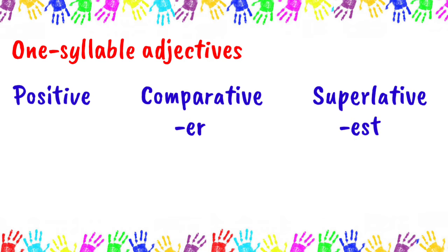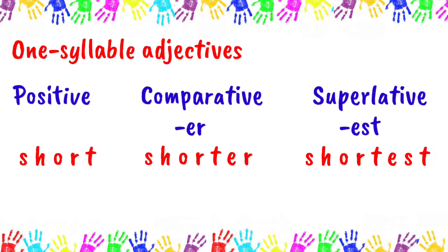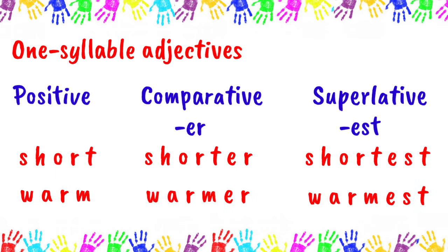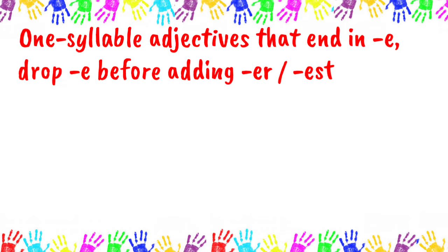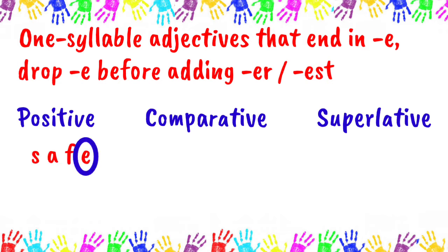For example: short, shorter, shortest; warm, warmer, warmest. Next, for one-syllable adjectives that end in E, drop the E before adding ER to their comparative forms and EST to their superlative forms. For example: safe, safer, safest; nice, nicer, nicest.